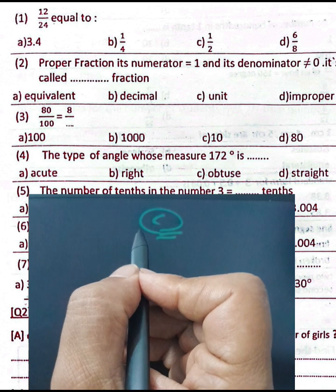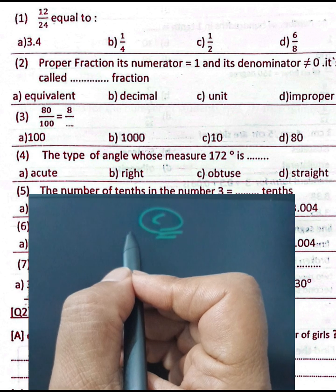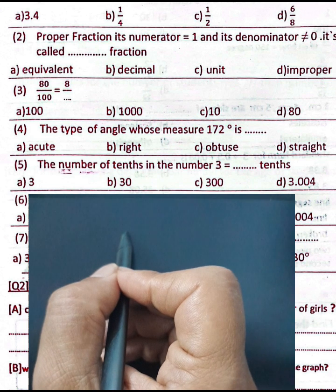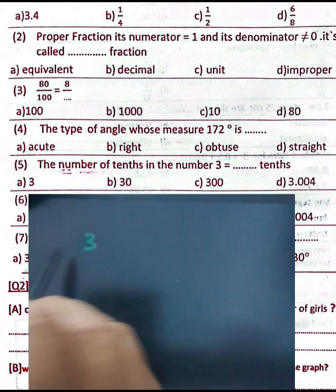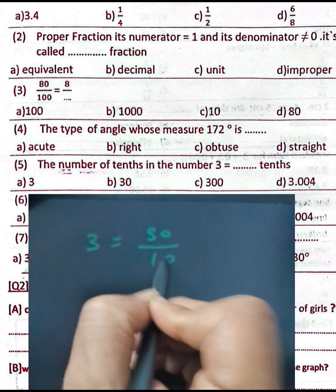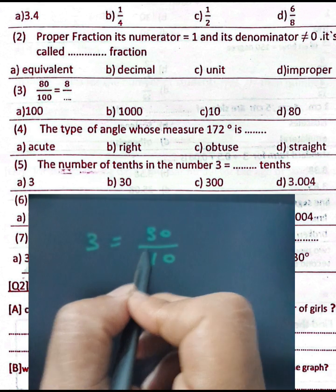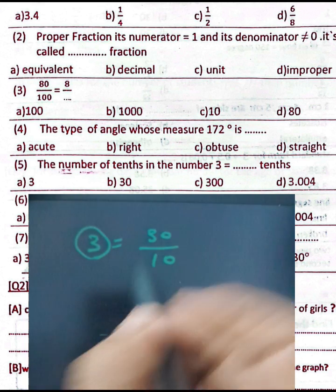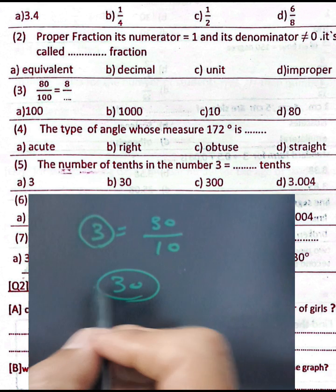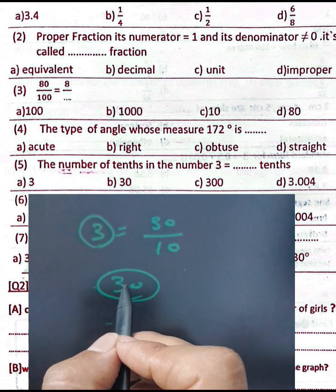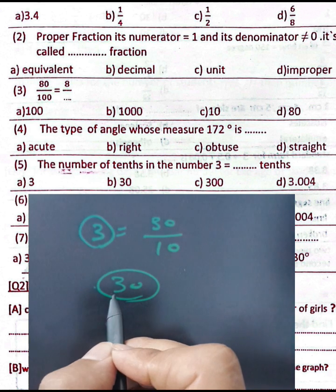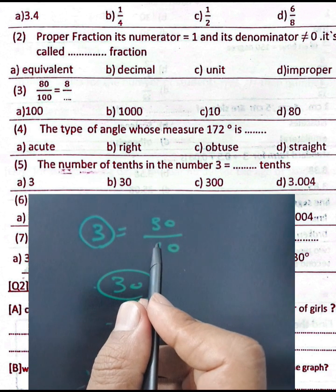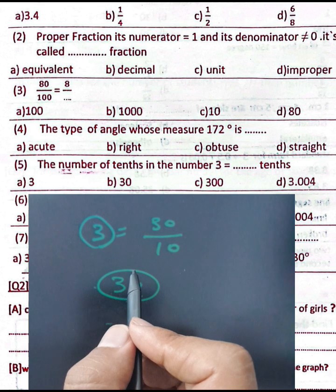It's an obtuse angle because 172 is greater than 90 degrees and less than 180 degrees. Question number five: the number of tenths in the number 3. We know 3 equals 30 over 10, so the number of tenths in 3 is 30. Because 30 over 10 means tenths — the number of tenths in 3 equals 30.